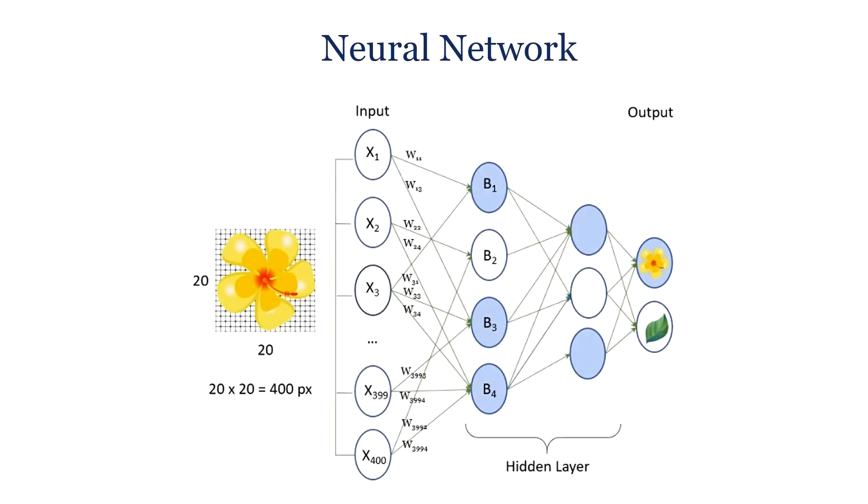Next is neural network. A neural network is a set of connected input output units. Each connection has a weight associated with it which is adjusted by the network during the learning process, so that the network is able to predict the correct class label for input tuple.